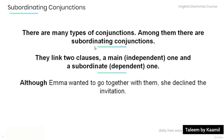Now there are many types of conjunctions, and among them are subordinating conjunctions. Subordinating conjunctions link two clauses: a main independent one and a subordinate dependent one. Have a look at the example: 'Although Emma wanted to go together with them, she declined the invitation.' Note that 'she declined the invitation' is the independent clause, and 'Emma wanted to go together with them' is the dependent subordinate clause. These two sentences are linked together with the subordinating conjunction 'although.'